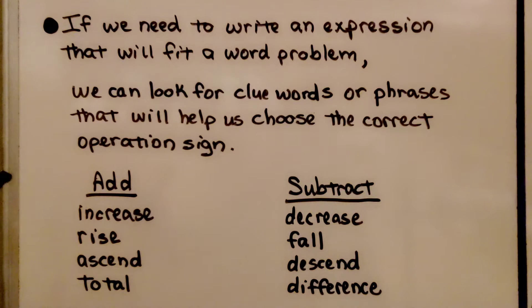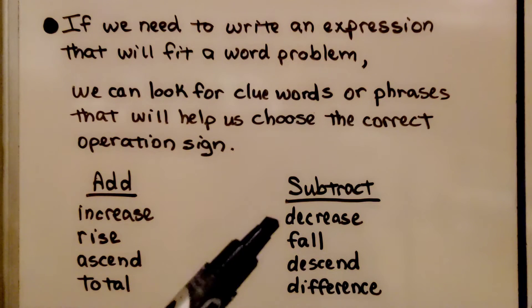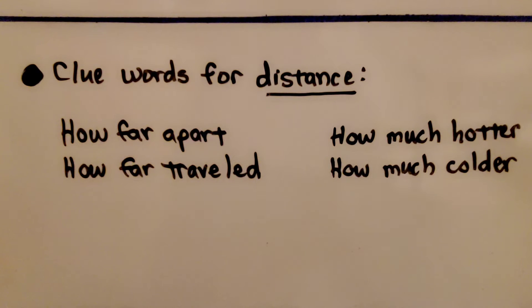For addition, we'll see clue words like increase, rise, ascend, total. For subtraction, we'll see decrease, fall, descend, difference. And there are clue words for distance: how far apart, how far traveled, how much hotter, how much colder.